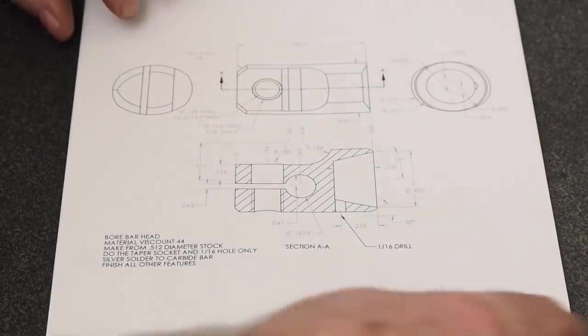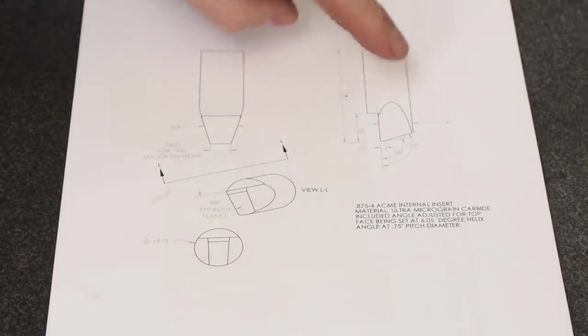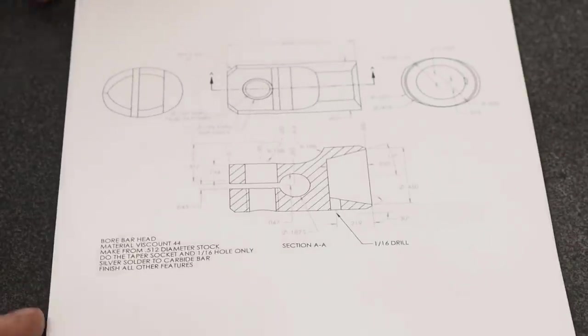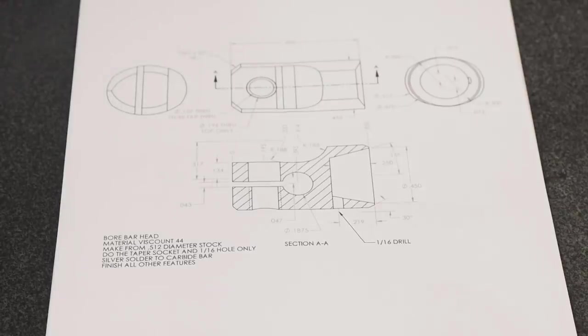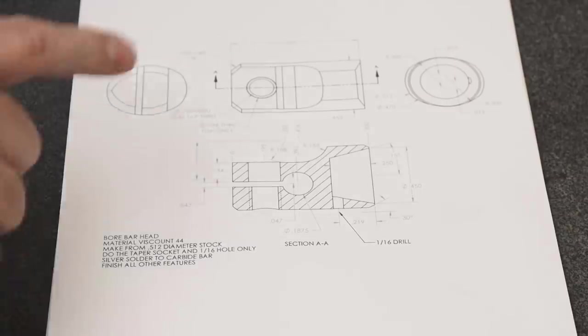We're going to use this head and a tool that goes in here. It's going to be a 3/16ths carbide and we'll just grind the proper angles, the proper reliefs. Robin was so good, he sketched all this up. I've never met Robin personally but I've talked to him numerous times on the phone. It's always an education every time I get to talk to him.